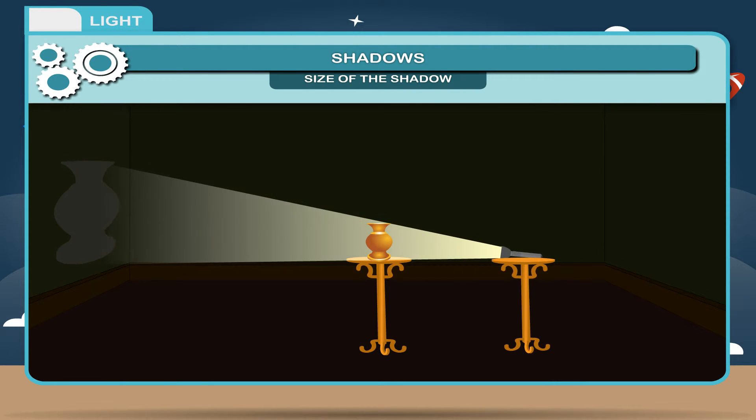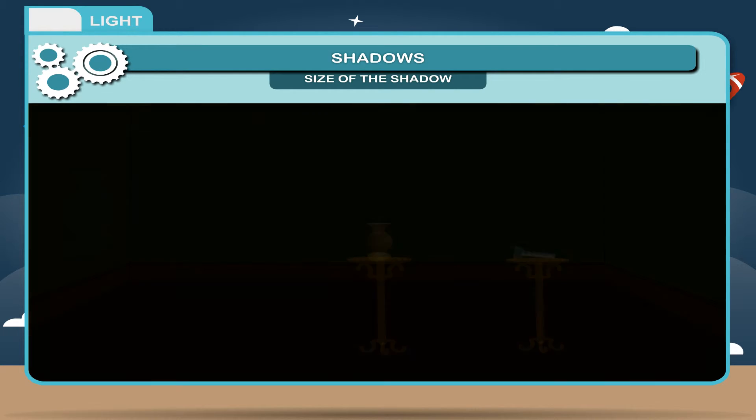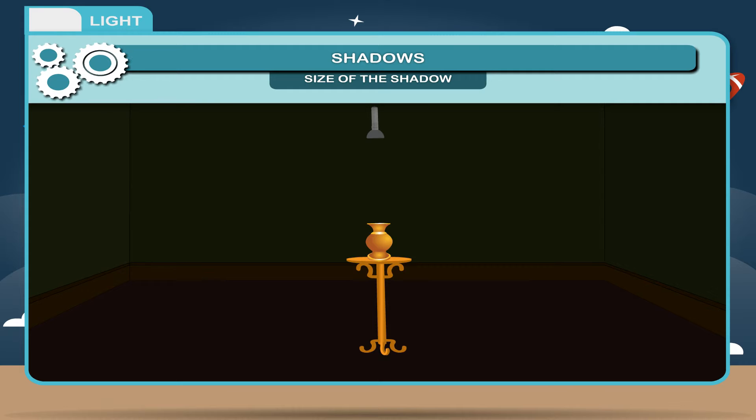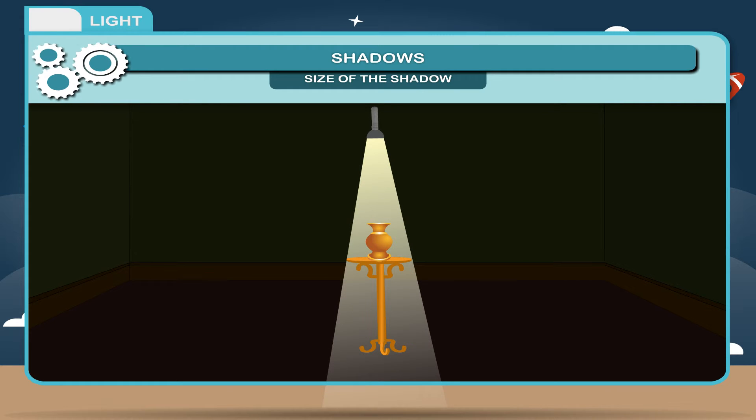As we move the source away from the object, the shadow gets smaller. When the light shines on an object from above, the shadow appears on the floor beneath the object and it is very small.